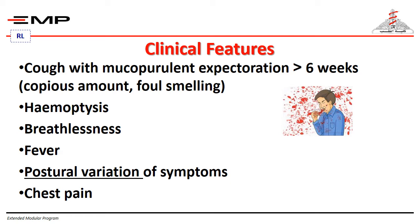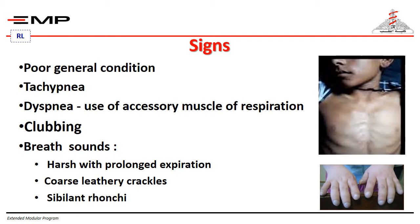If the patient has bronchiectasis in the upper right lobe, symptoms occur when lying on the left side. They may also have chest pain. On examination, I will find poor general condition due to chronic infection, tachypnea with use of accessory muscles of respiration — intercostal muscles, subcostal muscles, and suprasternal muscles.